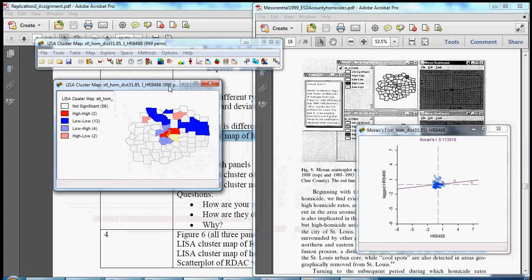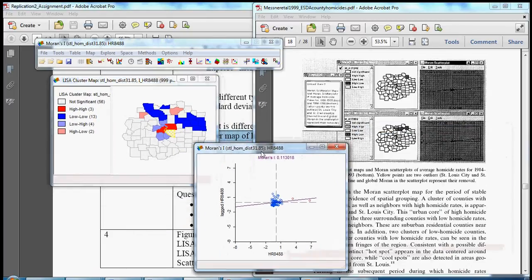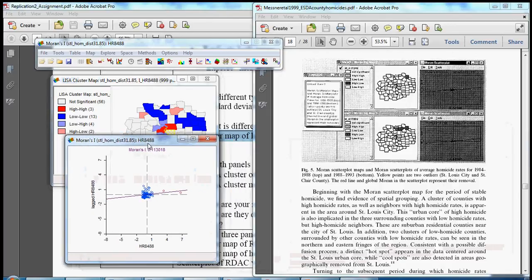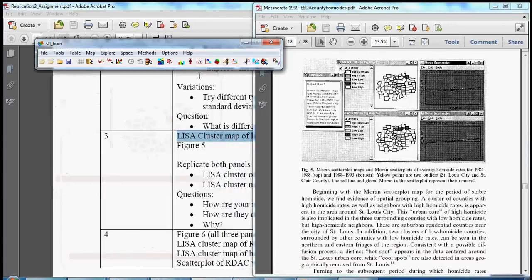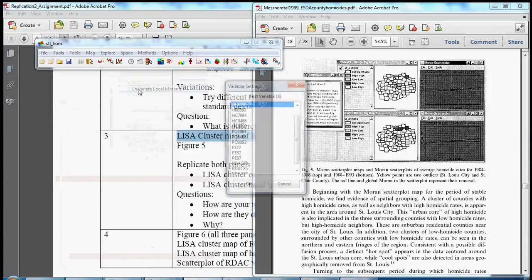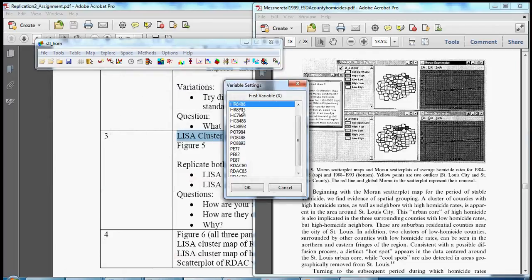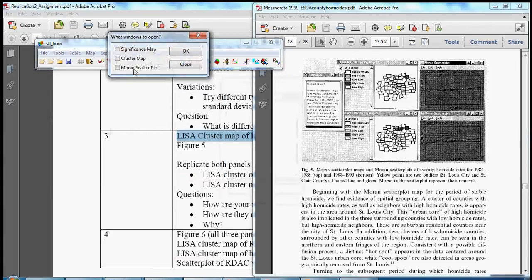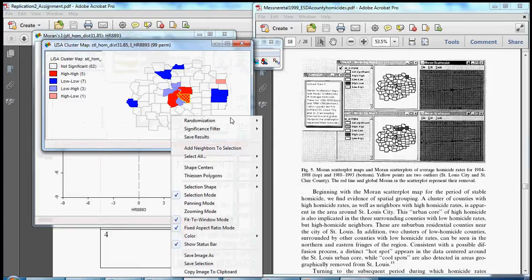So let's move forward here and generate the bottom panel just to keep the replication going. Space, univariate local Moran's I. Now we want 88-93. Let's pick our cluster map and Moran scatter plot. And again, let's go to 999 permutations.